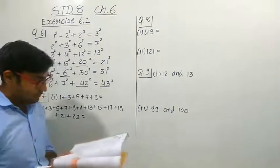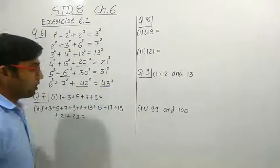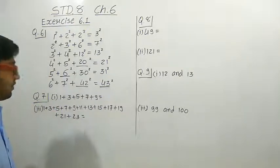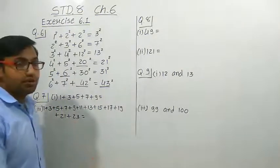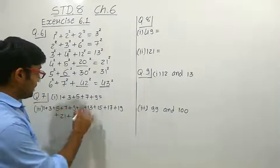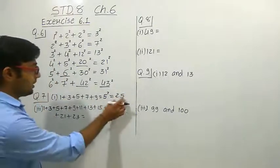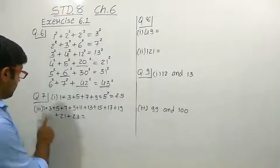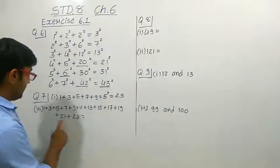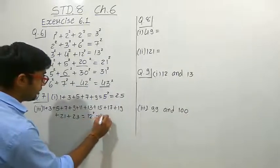Now question number 7: without adding, find the sum. We do not have to add; we have to find the sum without adding. This is the pattern we have already studied — adding consecutive odd numbers. Here there are 5 consecutive odd numbers, so the addition must be 5 squared, which equals 25. For the second part, count how many odd numbers there are: there are 12 consecutive odd numbers. That means the addition must be 12 squared, which equals 144.